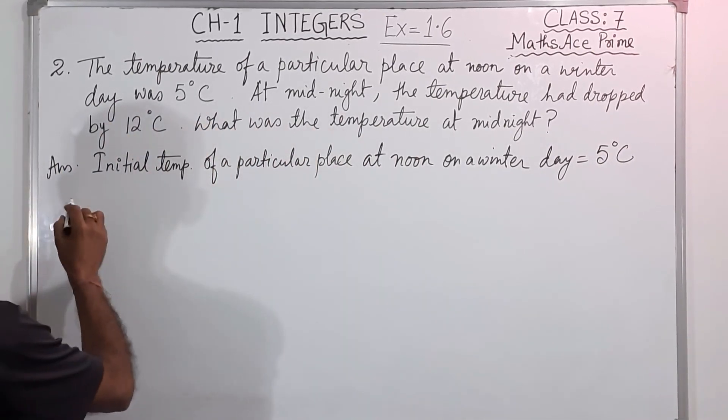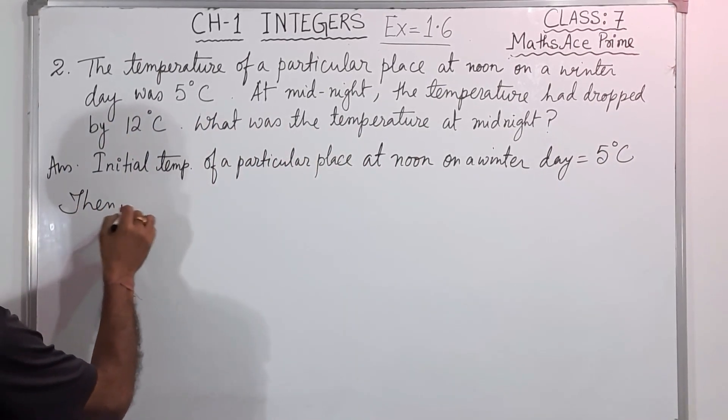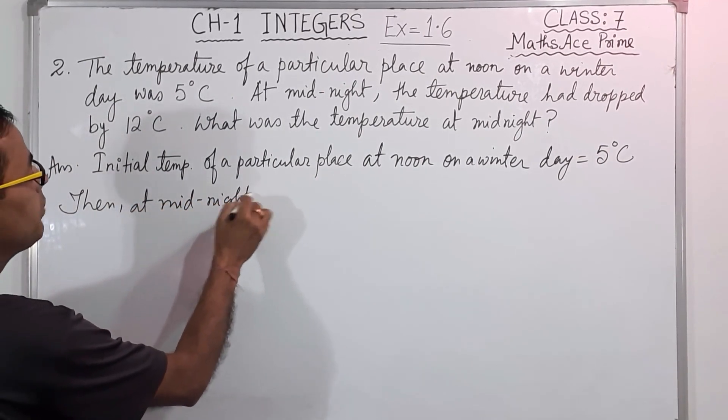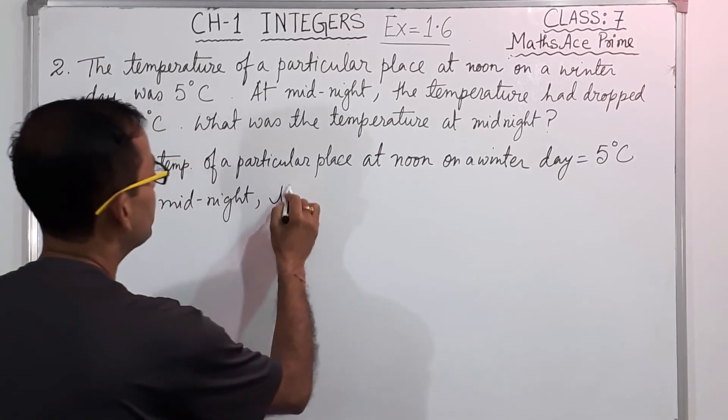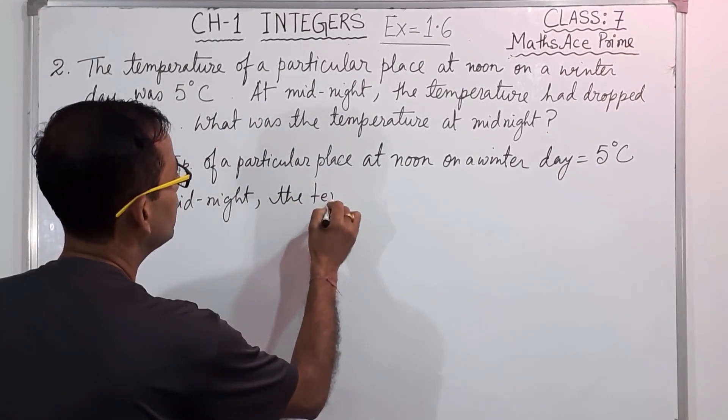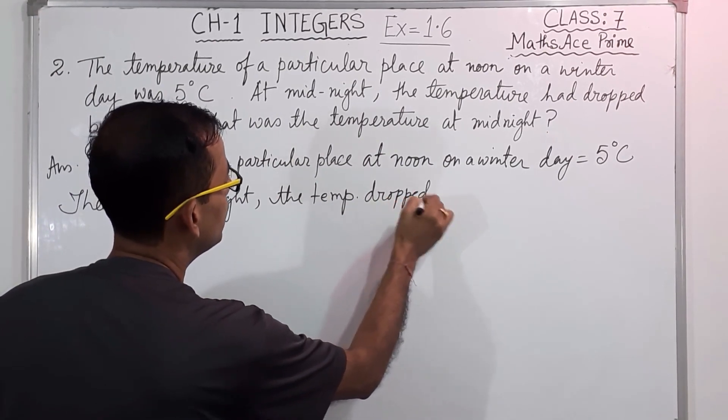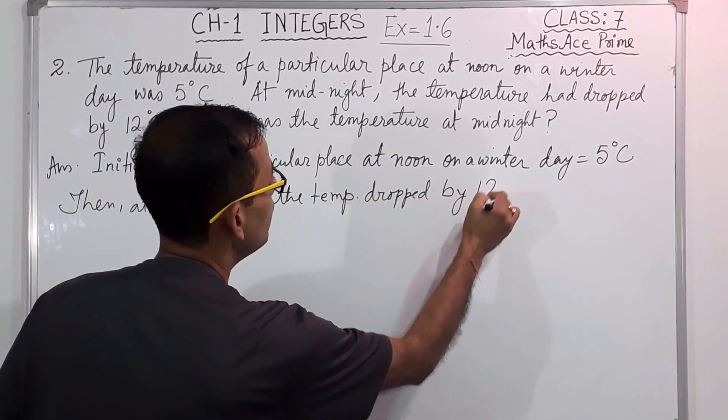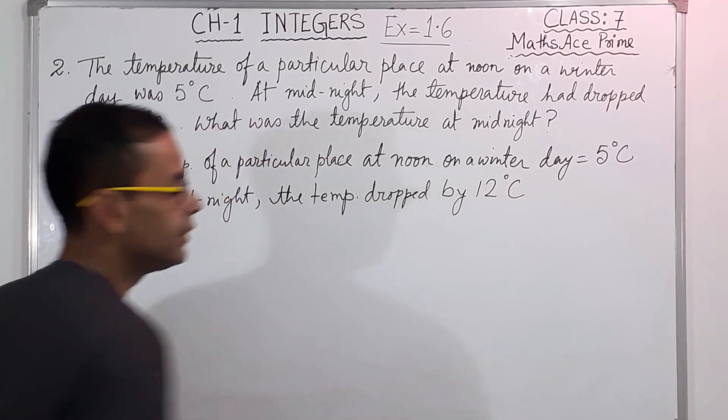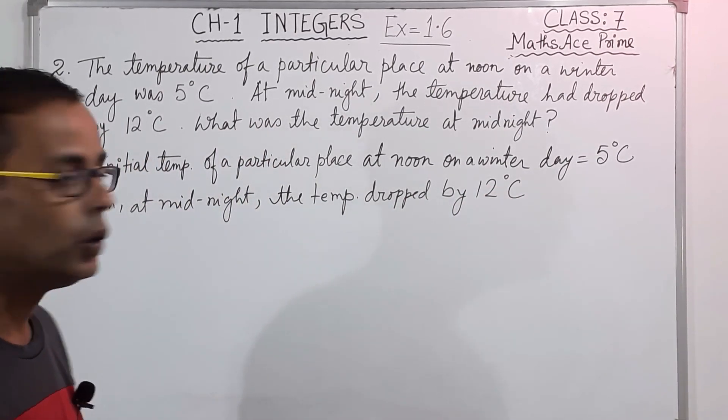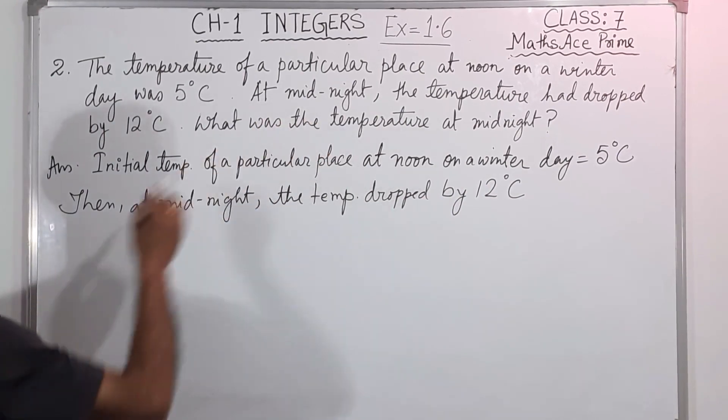The initial temperature of a particular place at noon on a winter day equals 5 degrees Celsius. Then what happened? Then, at midnight, see, it is written in the question only, then at midnight, the temperature dropped by 12 degrees Celsius. That means, it became more 12 degrees low. So what was the temperature at midnight?